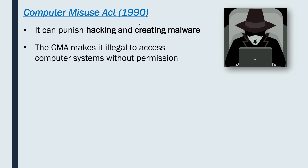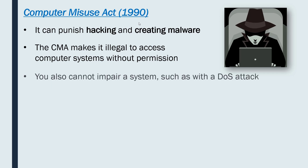The CMA makes it illegal to access computer systems without the permission of the owner. You can't just hack into a system — you must have permission, otherwise it is illegal under this law. You also can't impair a system, so even if you're just trying to steal information, you could also damage the system. For example, a DoS attack — spamming a system to stop it working — is said to impair the system, and that is also illegal under this law.